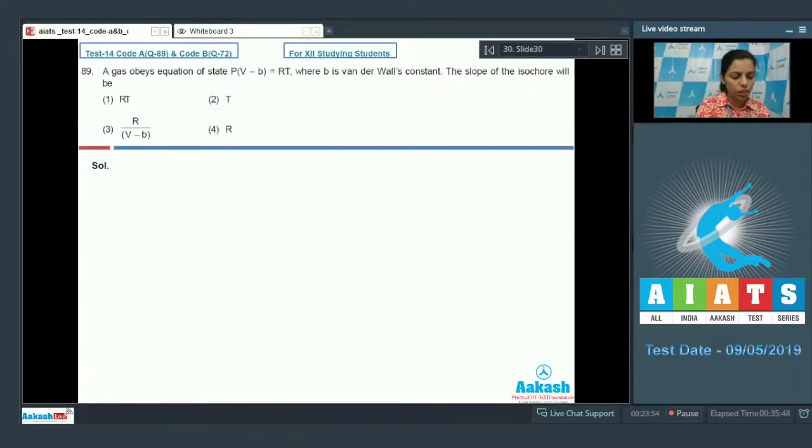After this is the question, that is question number 89. A gas obeys equation of state p(V - b) equals RT, where b is van der Waals constant. The slope of isochore will be. For this, first of all, we have to just look at the graph that we obtain. In that case, the graph that we obtain is a straight line.